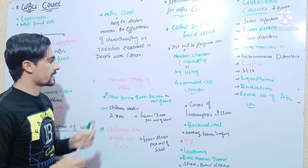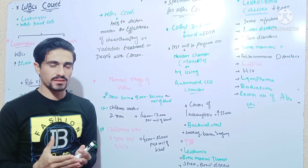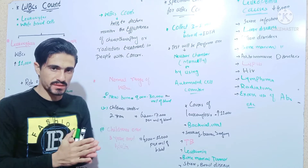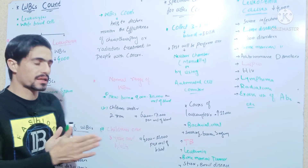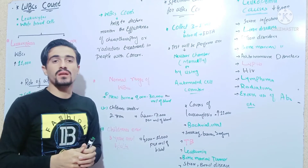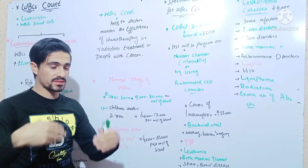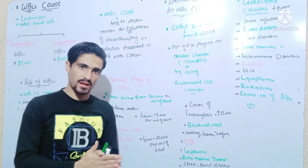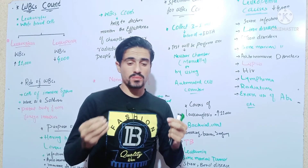The normal range of WBC differs by age group. For newborns, it is 9,000 to 30,000 per MCL of blood. Children under 2 to 3 years have a different count. For adults, the normal range is 4,000 to 11,000 per MCL of blood.